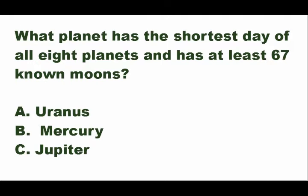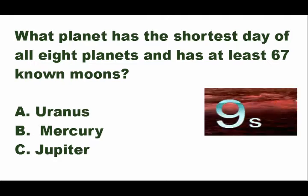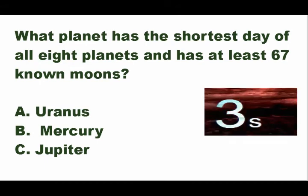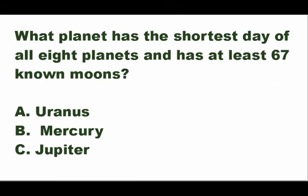Next: what planet has the shortest day of all eight planets and has at least 67 known moons? Is it A — Uranus, B — Mercury, or C — Jupiter? The answer is letter C — Jupiter.